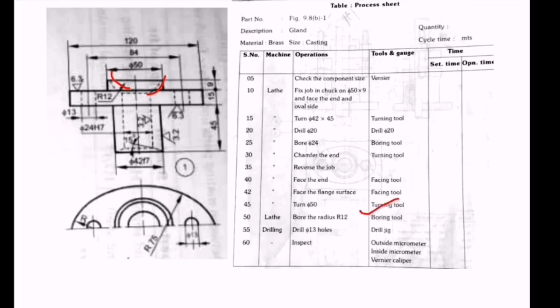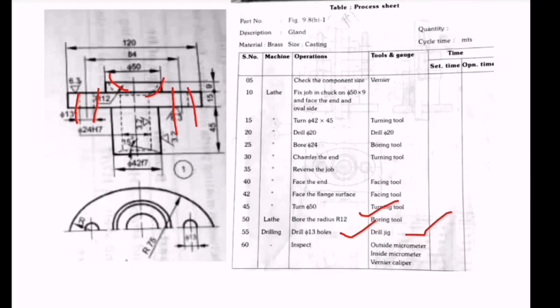To both sides of that 50 diameter. After that, drilling 13 diameter holes - one hole on this side and another on this side, using a drill jig. Finally, inspect the product using outside micrometer, inside micrometer, or calipers.